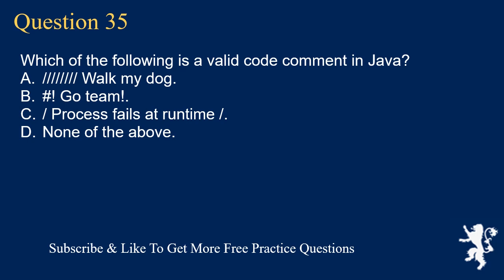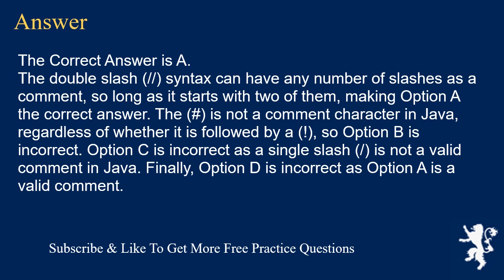Question 35: Which of the following is a valid code comment in Java? A) /// walk my dog, B) # go team, C) /* process fails at runtime /, D) none of the above. The correct answer is A. The double-slash syntax can have any number of slashes as a comment, so long as it starts with two, making option A the correct answer. The hash is not a comment character in Java, so option B is incorrect. Option C is incorrect as a single slash is not a valid comment in Java. Option D is incorrect as option A is valid.